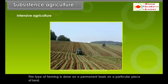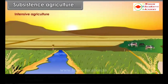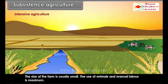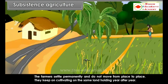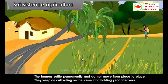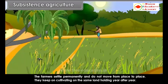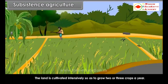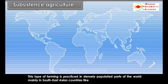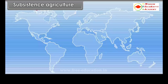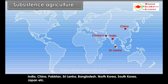Intensive subsistence agriculture is done on a permanent basis on a particular piece of land. The size of the farm is usually small, and the use of animals and manual labor is maximum. Farmers settle permanently and keep cultivating the same land year after year, often growing two or three crops a year. This type of farming is practiced in densely populated parts of the world, mainly in Southeast Asian countries like India, China, Pakistan, Sri Lanka, Bangladesh, North Korea, South Korea, Japan, etc.